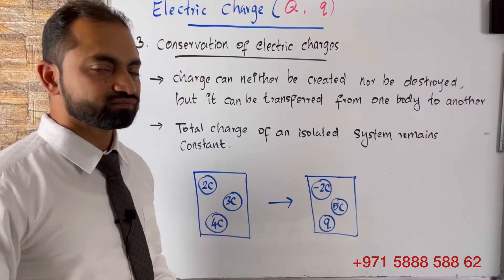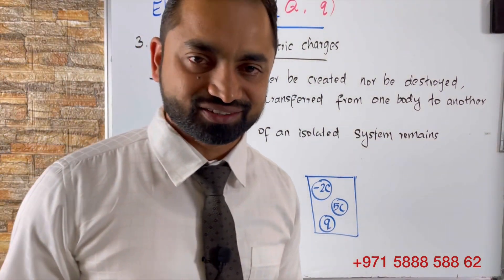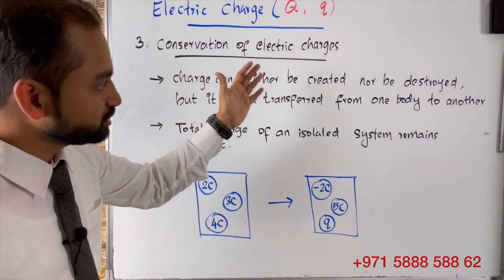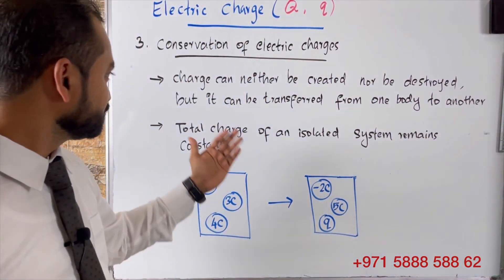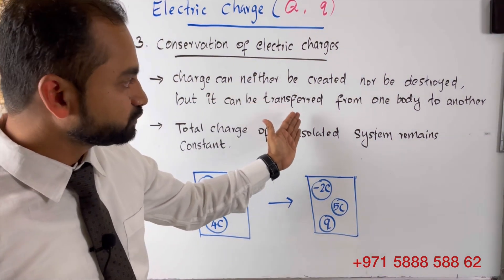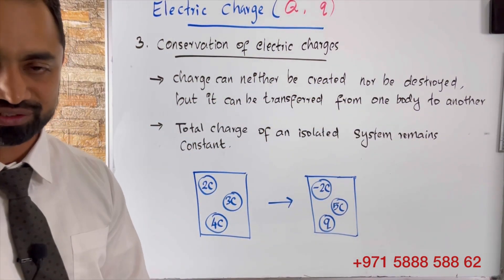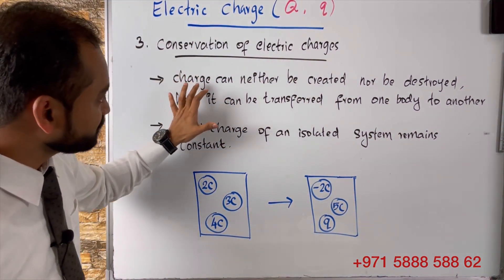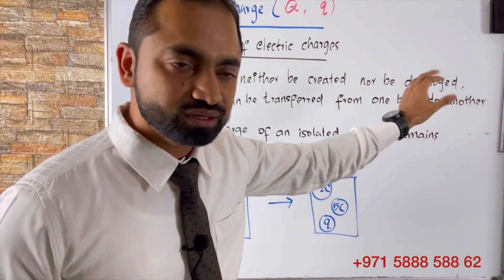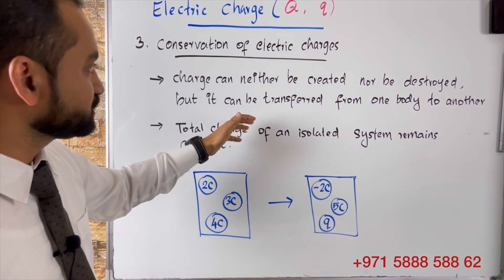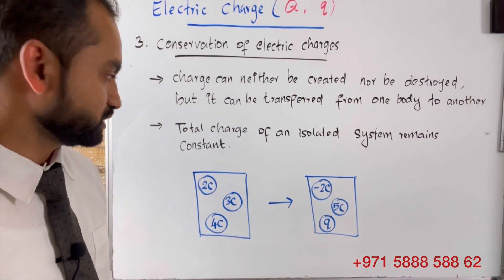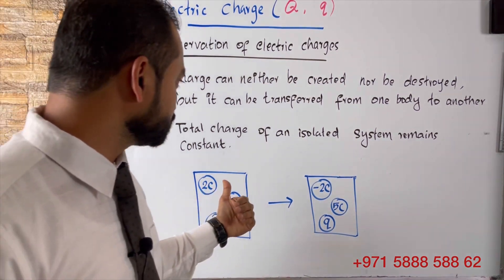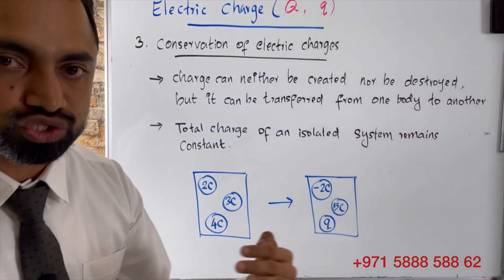The next topic is conservation of electric charge. Conservation of electric charge means charge can neither be created nor be destroyed, but it can be transferred from one body to another. The total charge of an isolated system remains constant.